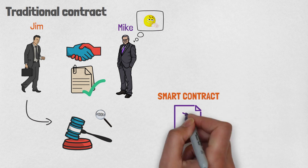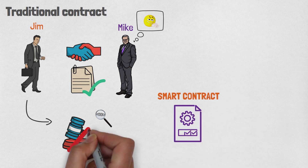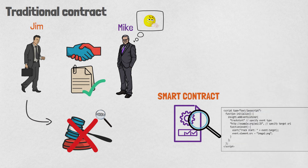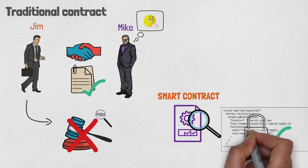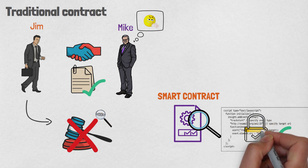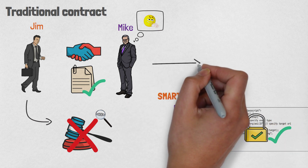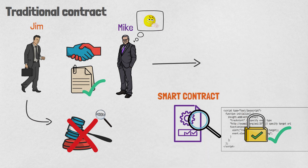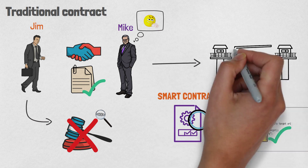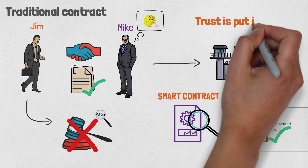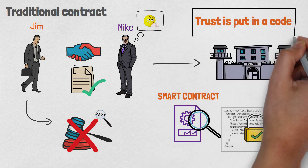With smart contracts, there is no third party to whom there is a need to prove the correctness of the contract. Smart contracts are written in code that is there to confirm the correctness of the contract, and if one of the parties violates some of the predetermined conditions, it will immediately trigger the action. For this reason, it is not possible to breach the contract and go unpunished. Trust is put in a code that eliminates the possibility of a human mistake.